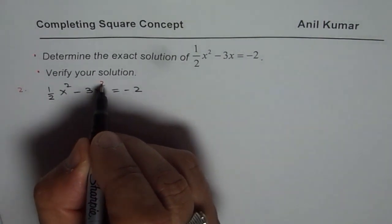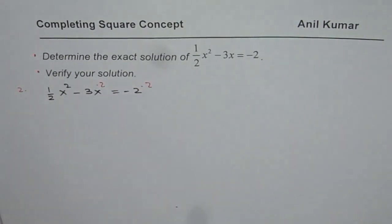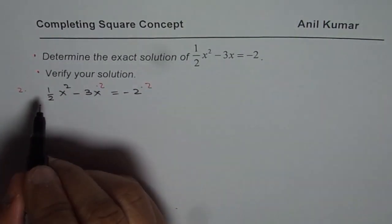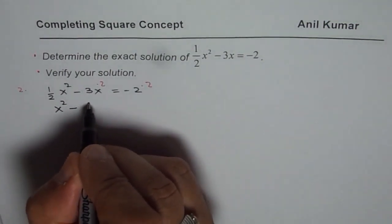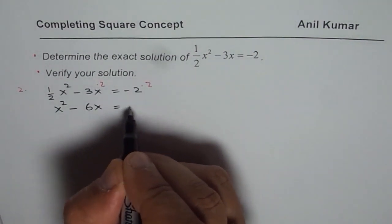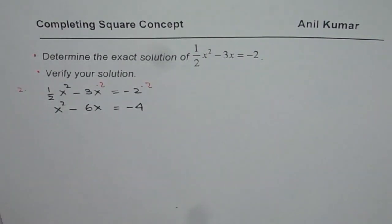So it is times 2 this one, times 2 that one and times 2 this one. So multiply all terms by 2. So we get here x square minus 6x equals to minus 4. That's the first step.